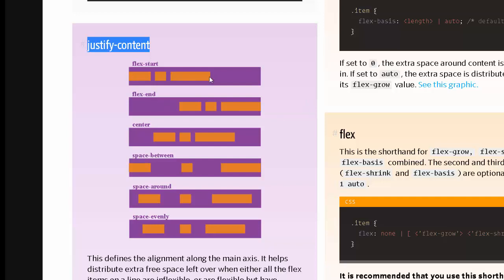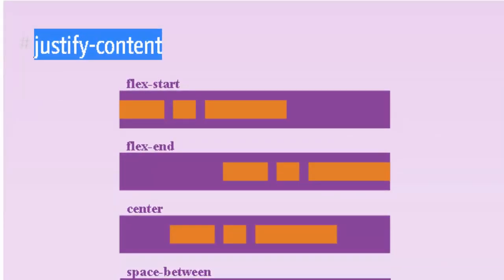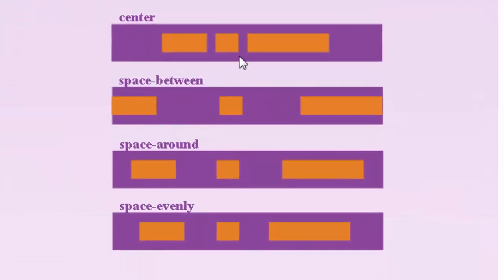Let's look at justify-content. 'flex-start' puts everything on the left, 'flex-end' puts everything on the right, 'center' squashes everything together with remaining space on the sides, 'space-between' puts the first item on the far left and the last item on the far right — and this is per row. 'space-around' splits the space differently, and 'space-evenly' evenly divides every gap between items.